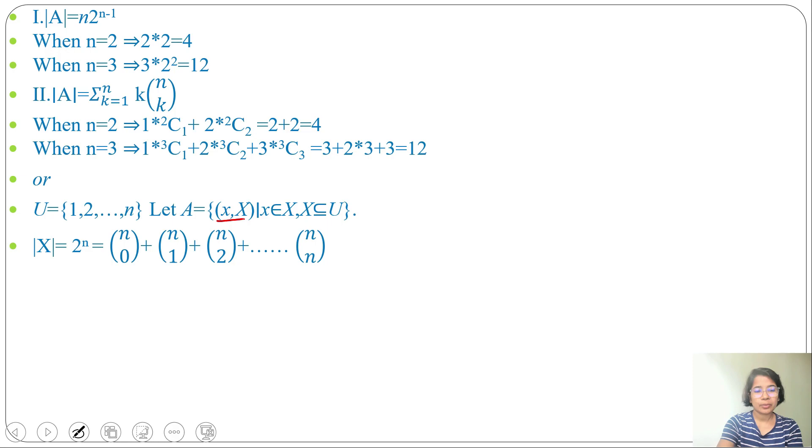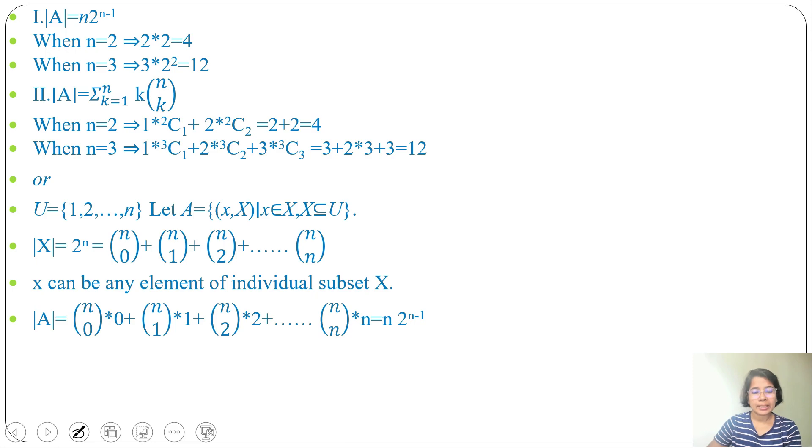So |X| can be 2 to the power n: C(n,0), C(n,1), C(n,2) till C(n,n). x can be any element of individual subset of X. So from n it can be 0 like it can be phi, it can be 1 element, it can be 2 elements, it can be n elements. Now |A| will be C(n,0) times 0, C(n,1) times 1, C(n,2) times 2, C(n,n) times n, that is equivalent to n times 2 to the power n minus 1.